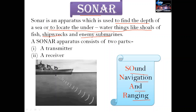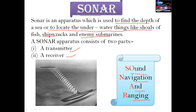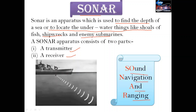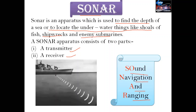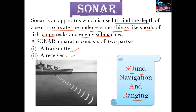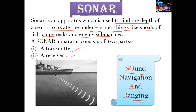The SONAR apparatus is set in the ship. It has two parts: a transmitter and a receiver. The transmitter transmits the signal. As soon as a fish or any object is detected, the signal reflects back to the receiver. Through this receiver, we can determine the distance between our ship and any other object such as another ship.